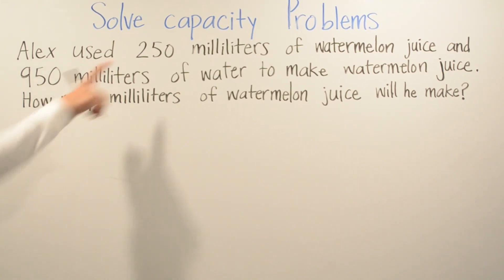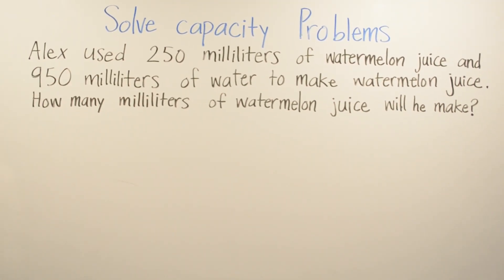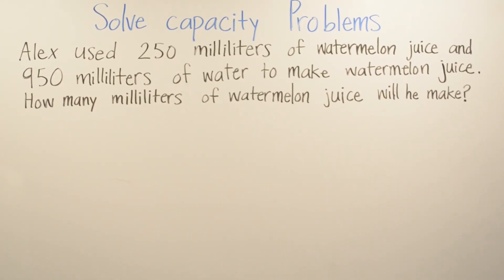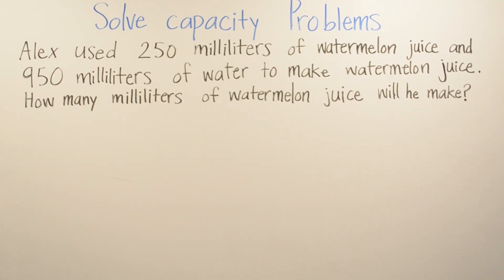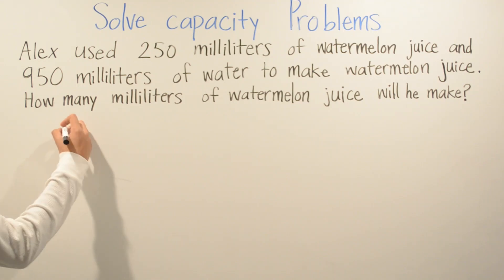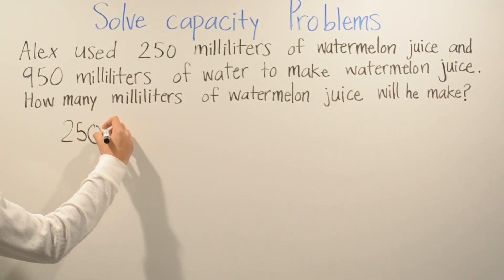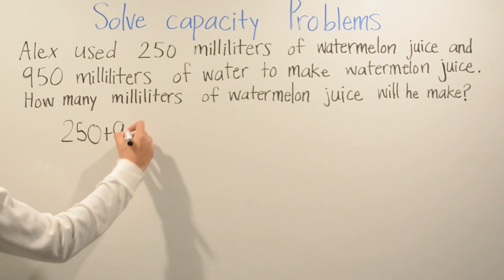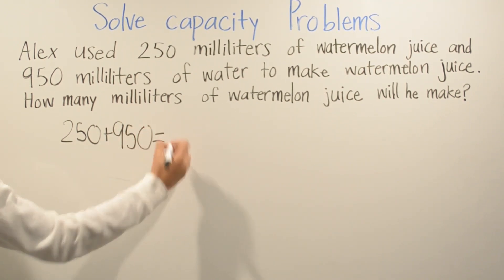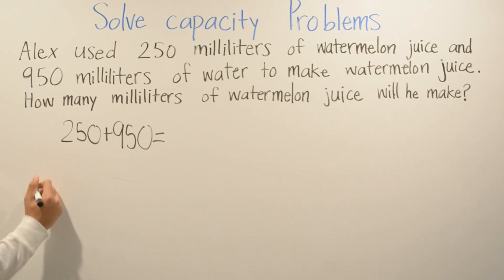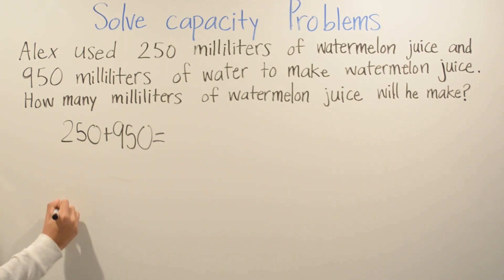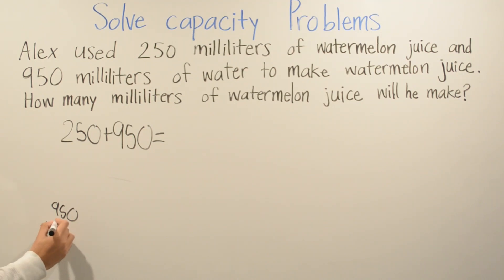We are going to add 250 milliliters and 950 milliliters to find how much milliliters he would make of watermelon juice in total. 250 plus 950. We're going to add right here on the bottom: 950 plus 250.